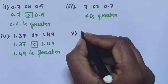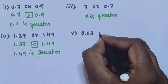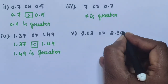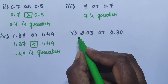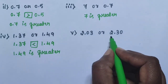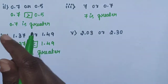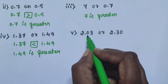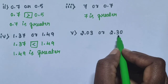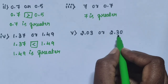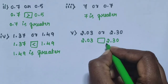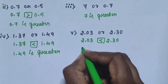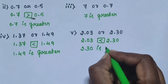Sub-question 5: 2.03 or 2.30. Compare these two decimal numbers. Units place is 2 and 2 — both the same. Next compare the decimal part: tenths place is 0 and 3. Compare 3 and 0 — 3 is the greatest number. Therefore, 2.30 is the greatest. 2.30 is greater.